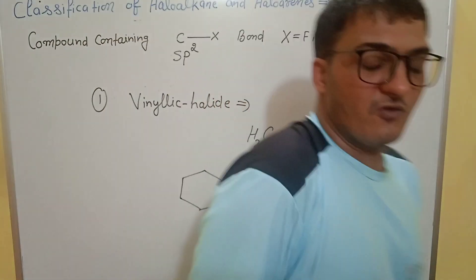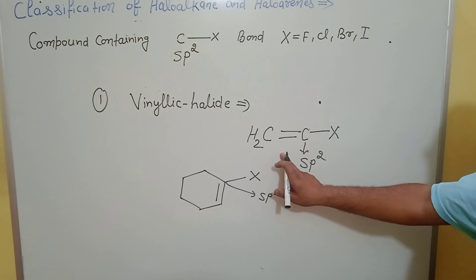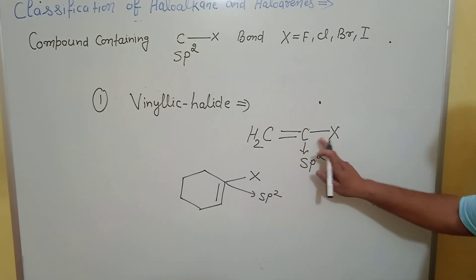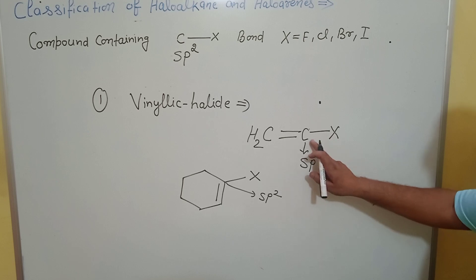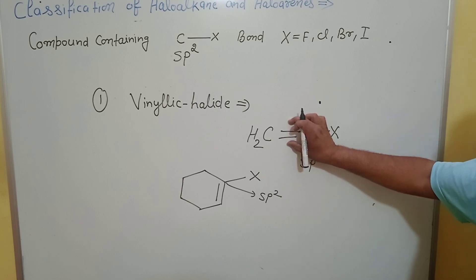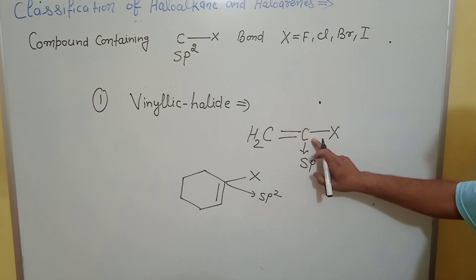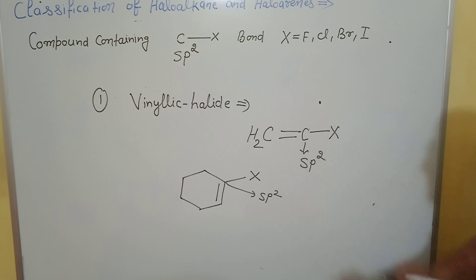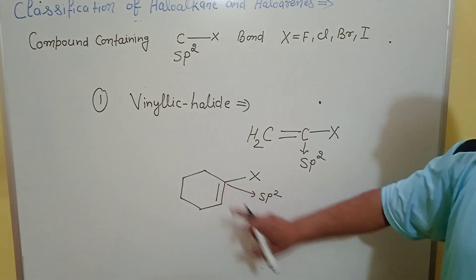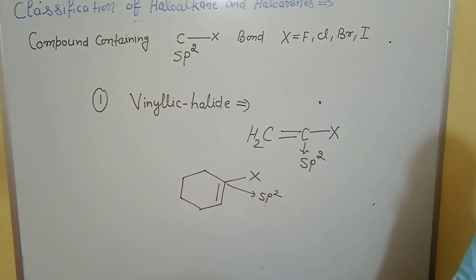In the vinylic halide form, the carbon containing the halogen (CX bond) is directly attached to another carbon by a double bond, so that carbon is sp2 hybridized. Both carbons involved are sp2 hybridized in this vinylic structure.